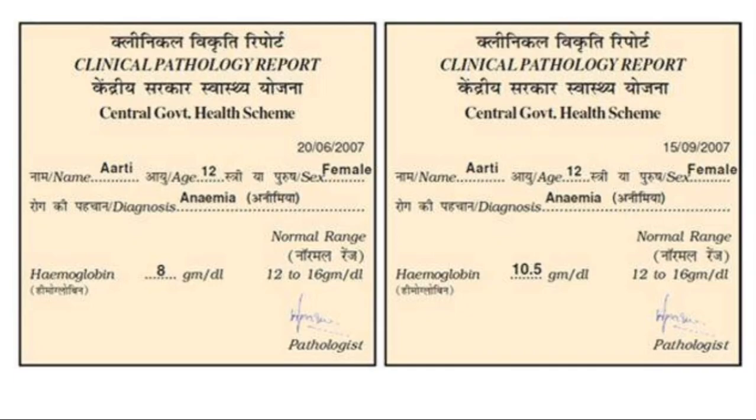Why jaggery? Jaggery means bellum. Amla means vitamin C — amla has vitamin C. And green leafy vegetables — totokora, palokora, amintukora — such vegetables, and also gongora, have more iron content. And also carrot and beetroot — such types of food items also have iron. That is why the doctor suggested to eat these kinds of food items.